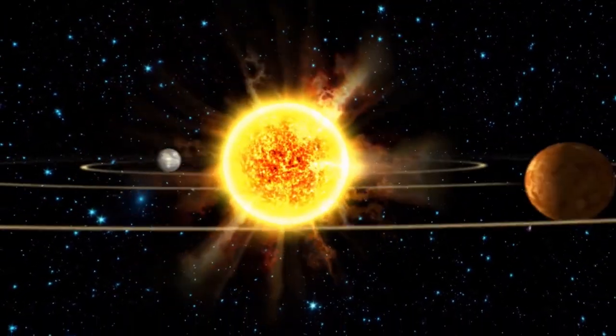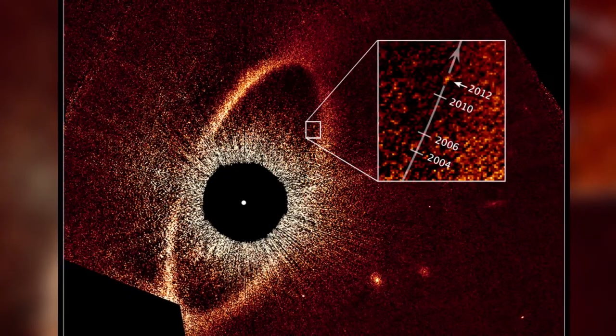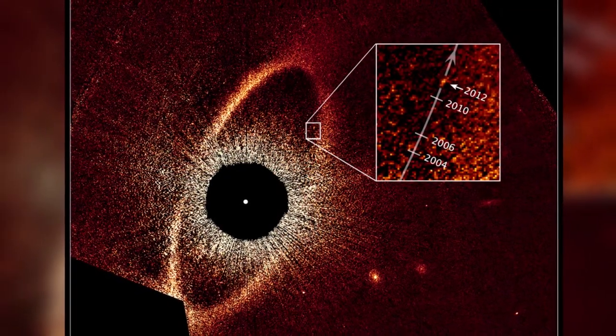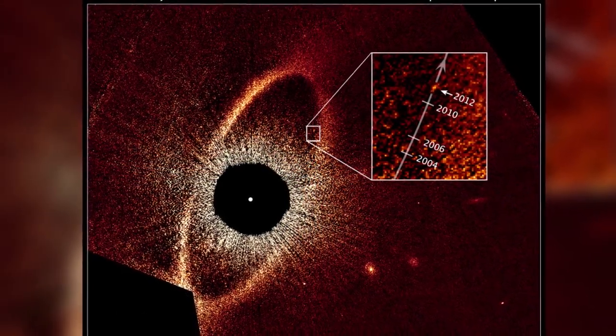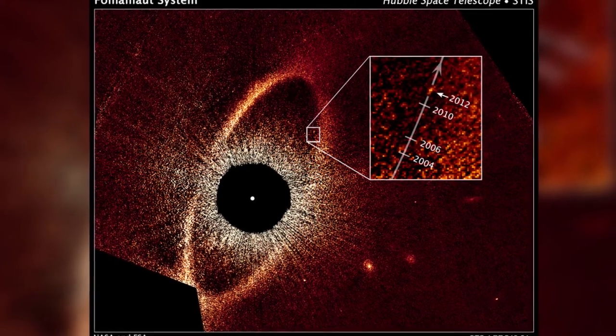Hubble has even photographed planets orbiting other suns. In 2008, for example, Hubble captured imagery of the exoplanet candidate Fomalhaut B, the first time such an object had been directly imaged in visible light.